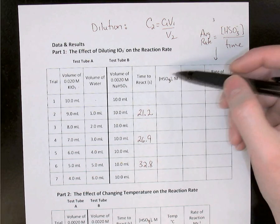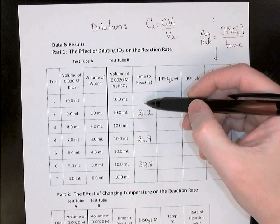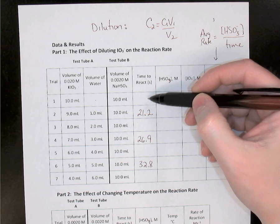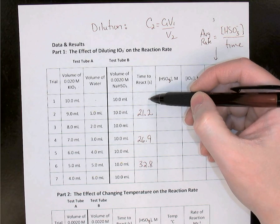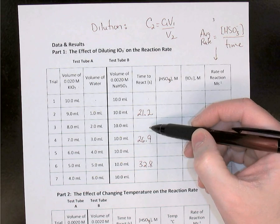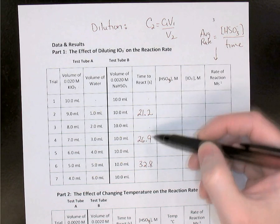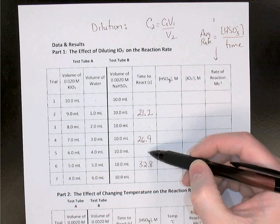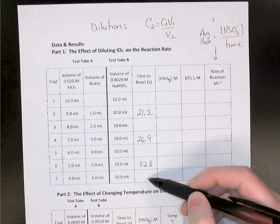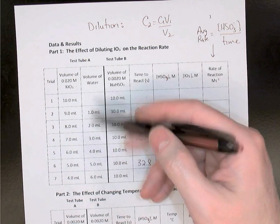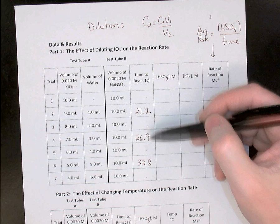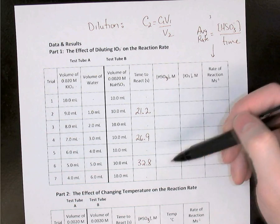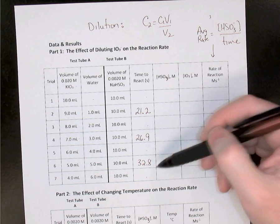You've got times recorded already for trial 1 (10 mL), trial 3 (8 mL), trial 5 (6 mL), and trial 7 (4 mL of KIO3). So you want to copy your times into the table and add mine.